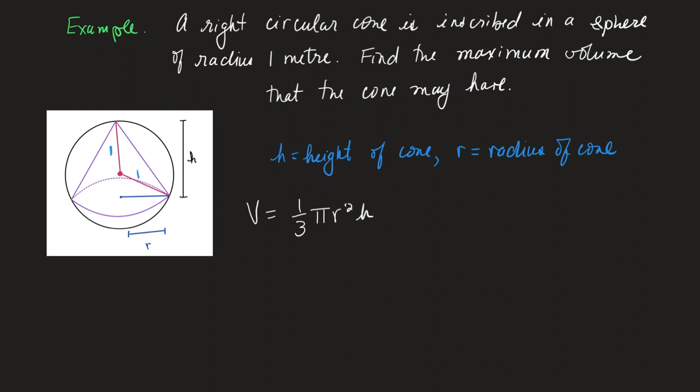Now over here if I extend this down, I have a right triangle. The radius of my cone is here, that's r, that's also r, so let's label that r. And if this distance from here to here is h, that's the height of my cone, and this radius is 1, then I know that this has to be h minus 1. So I'm going to label that too, that's h minus 1.